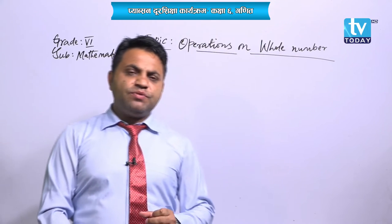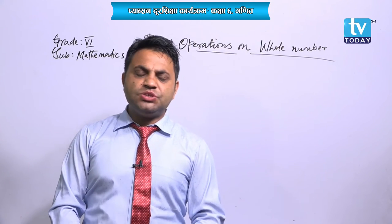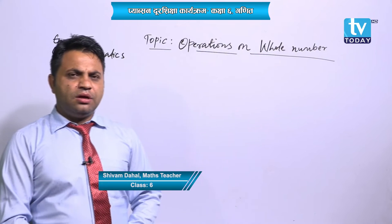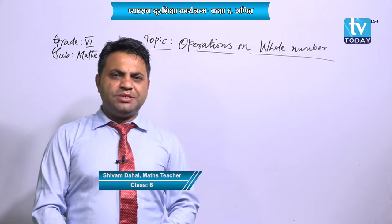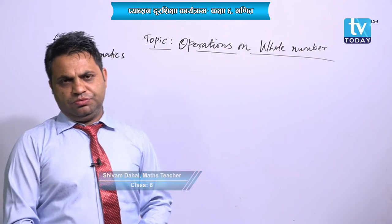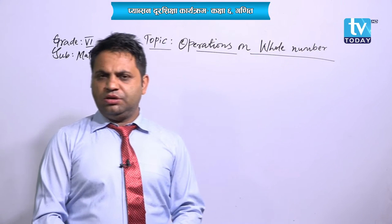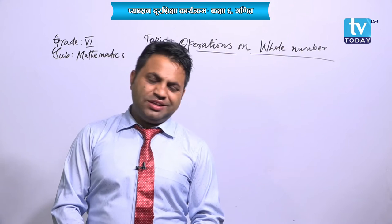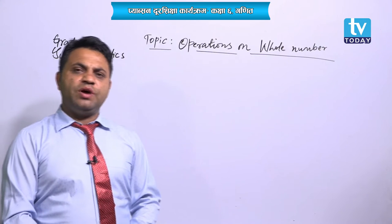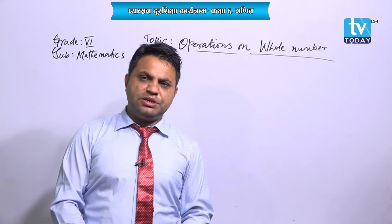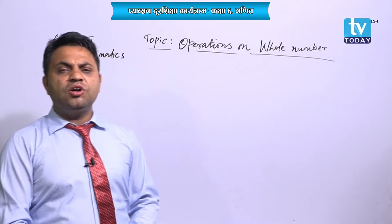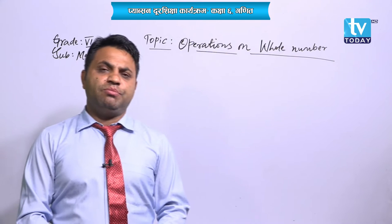Now, let me define first what a whole number is. Do you know? Whole number means counting number including 0. Like 0, 1, 2, 3, 4, 5, 6, 7, 8, 9, 10 — up to infinity. All these are whole numbers.